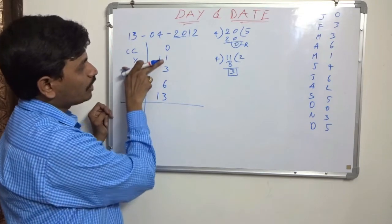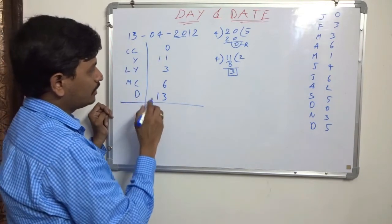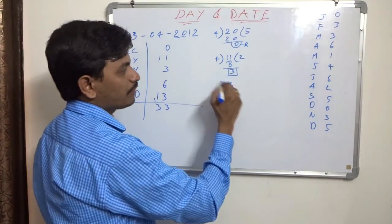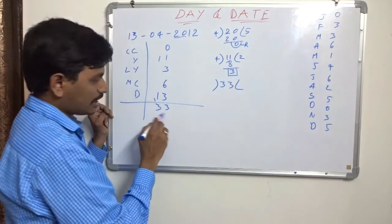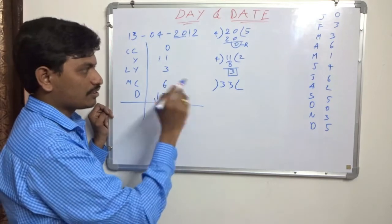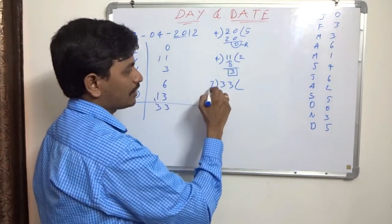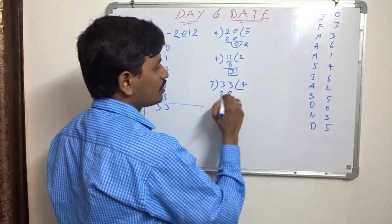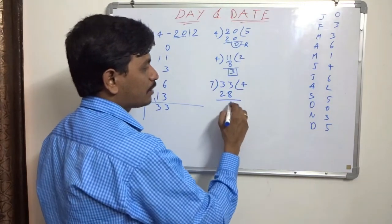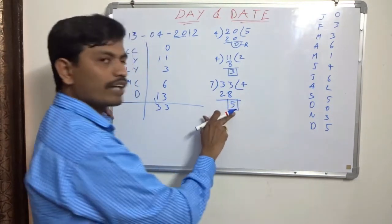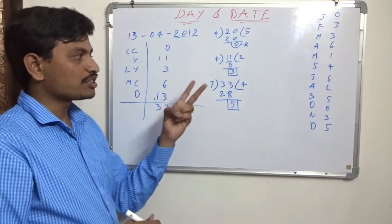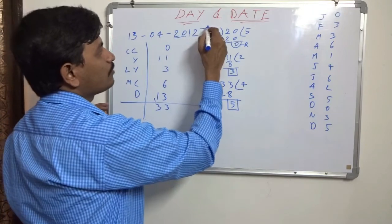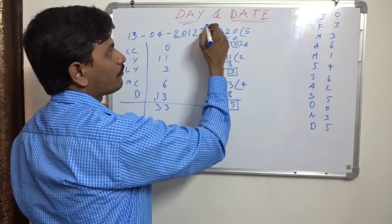Adding: 0 + 11 + 3 + 6 + 13 = 33 odd days. 33 ÷ 7: 7 × 4 = 28, remainder is 5. Day code 5 is Friday: Monday, Tuesday, Wednesday, Thursday, Friday. So 13th April 2012 falls on Friday.